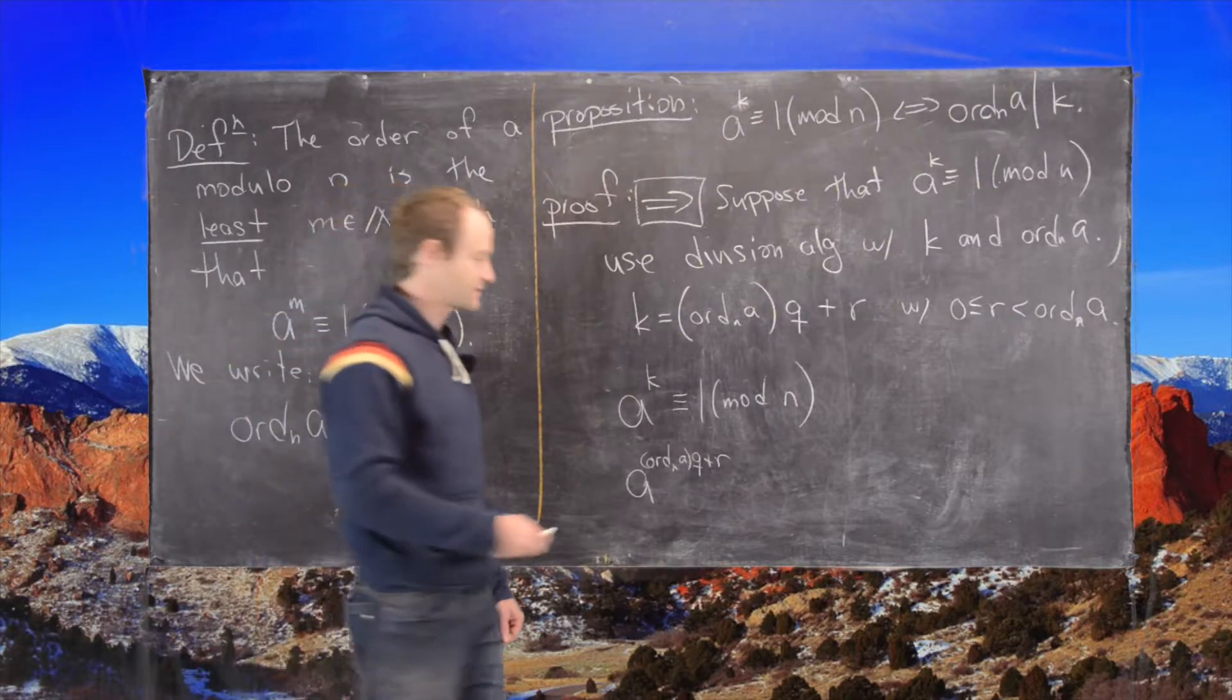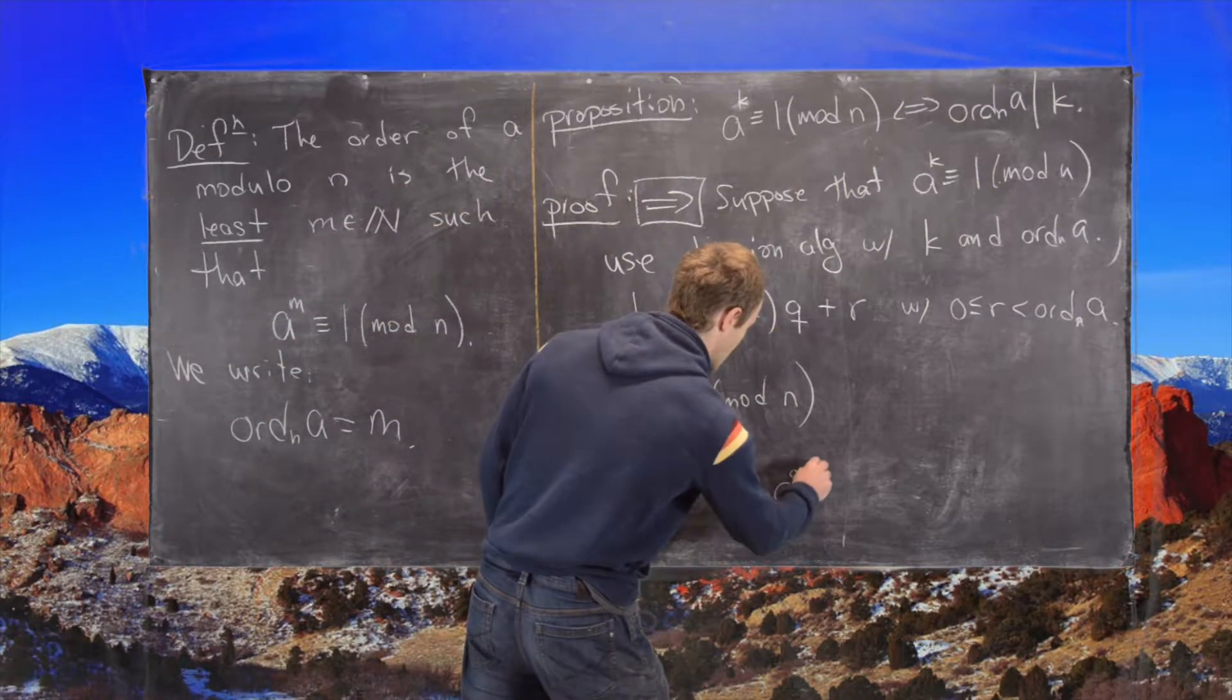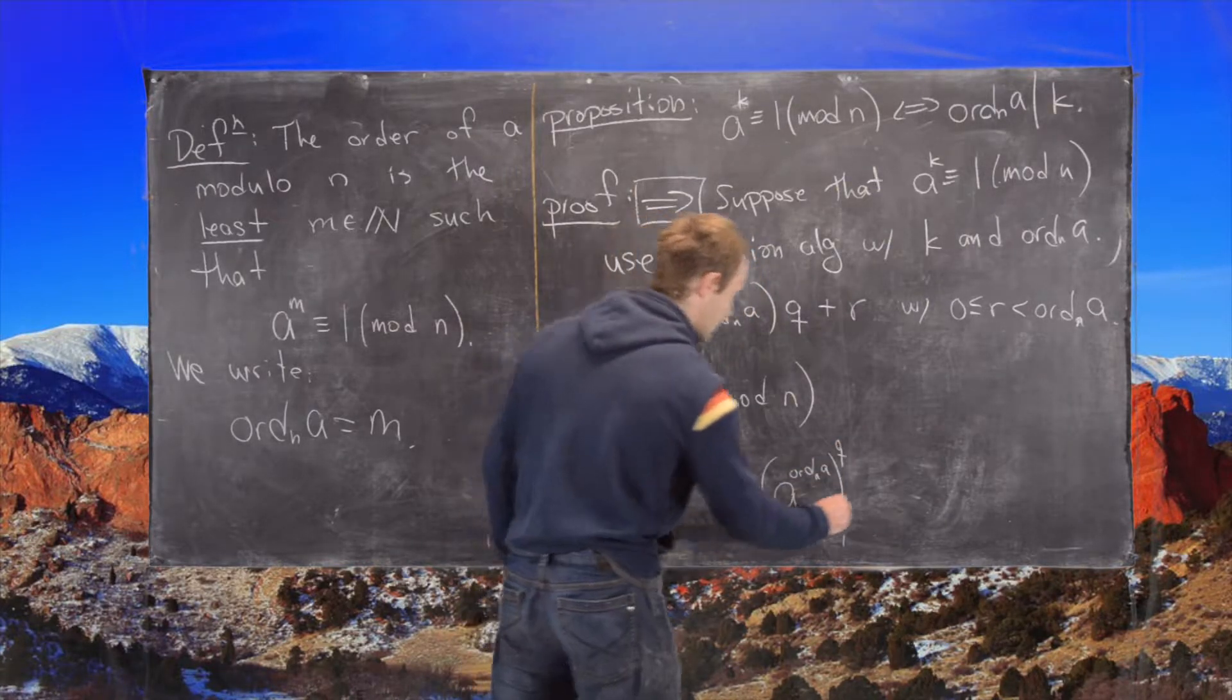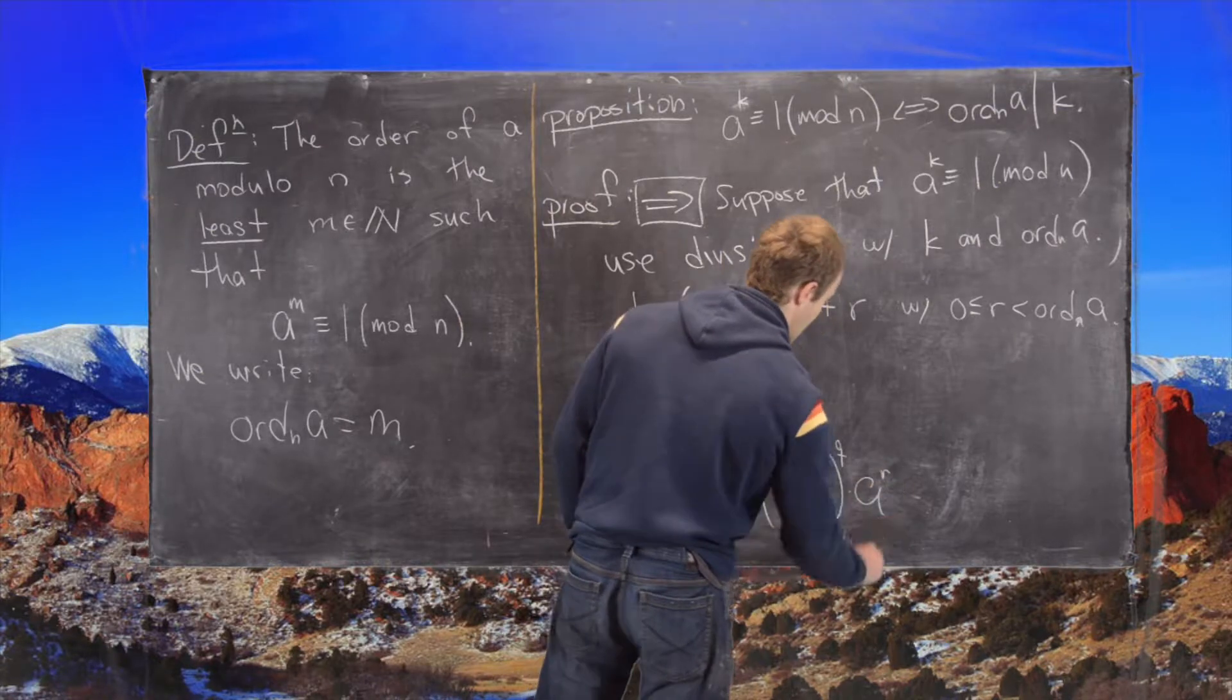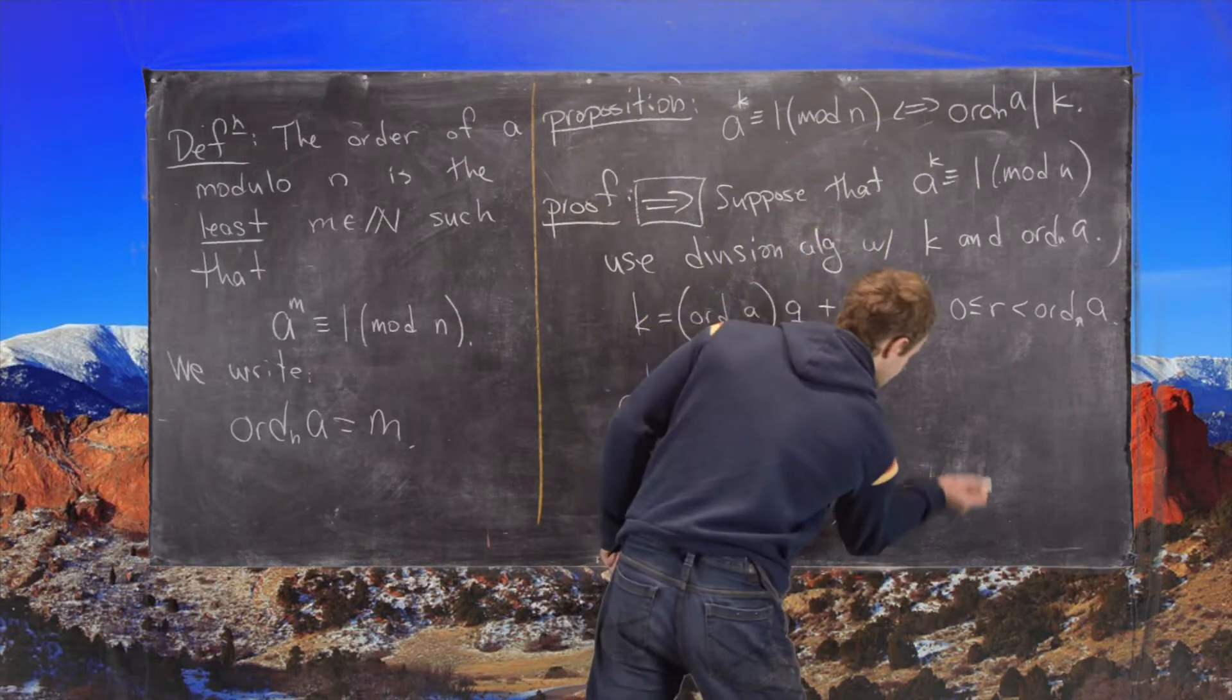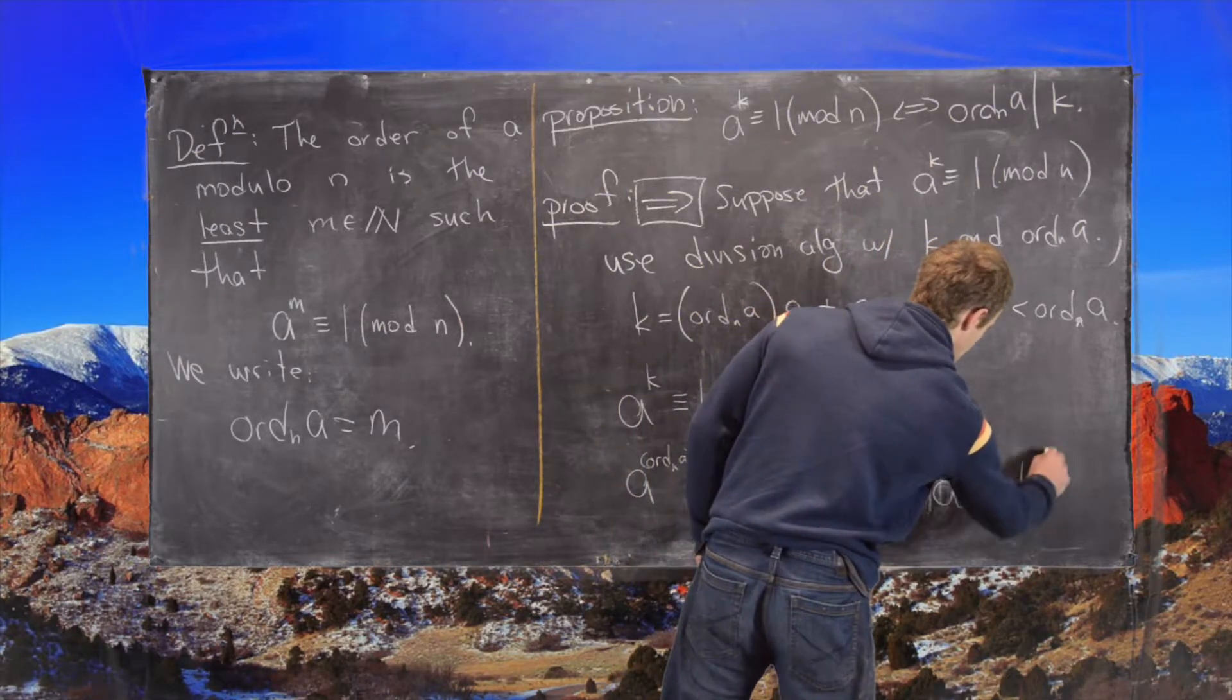And now we can use exponent rules to write this as follows. This is a to the order modulo n of a, all of that to the q power times a to the r power, which is congruent to 1, which is congruent to a to the r mod n.